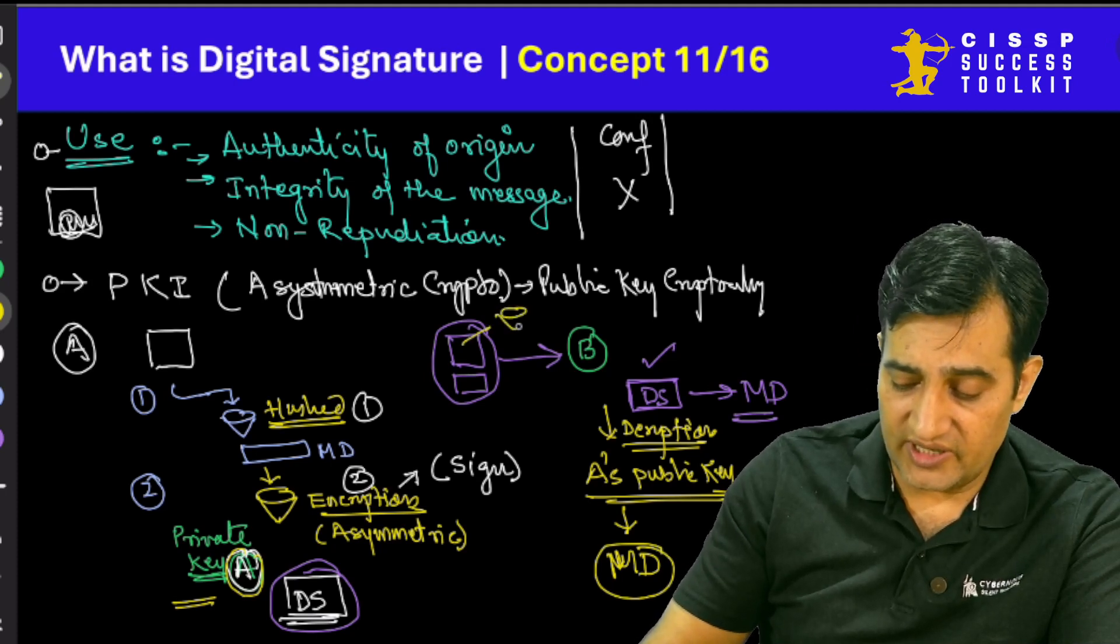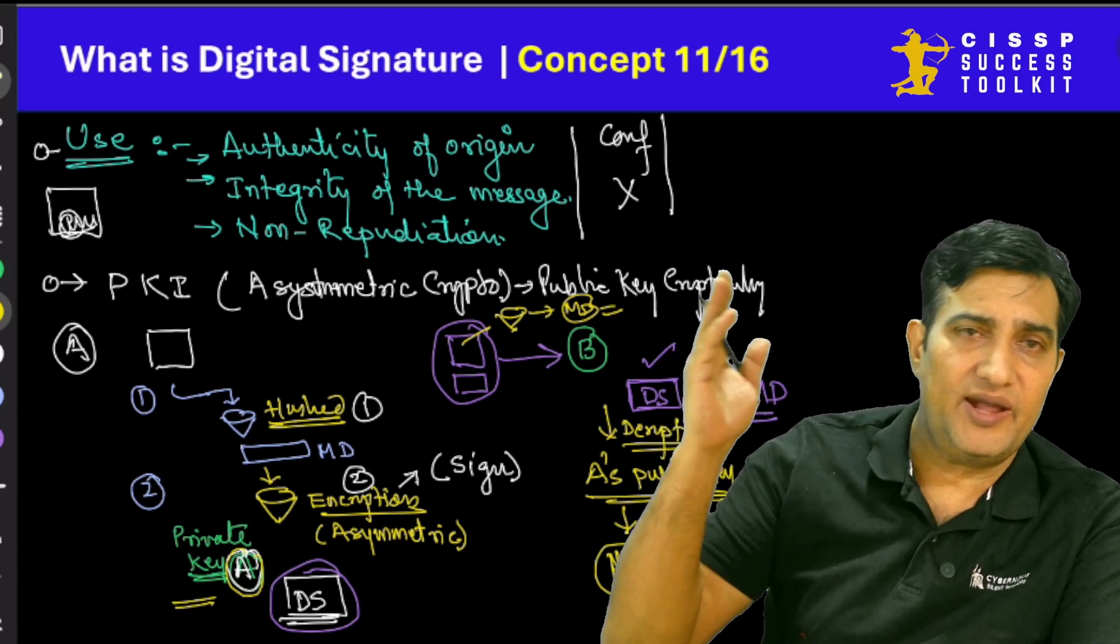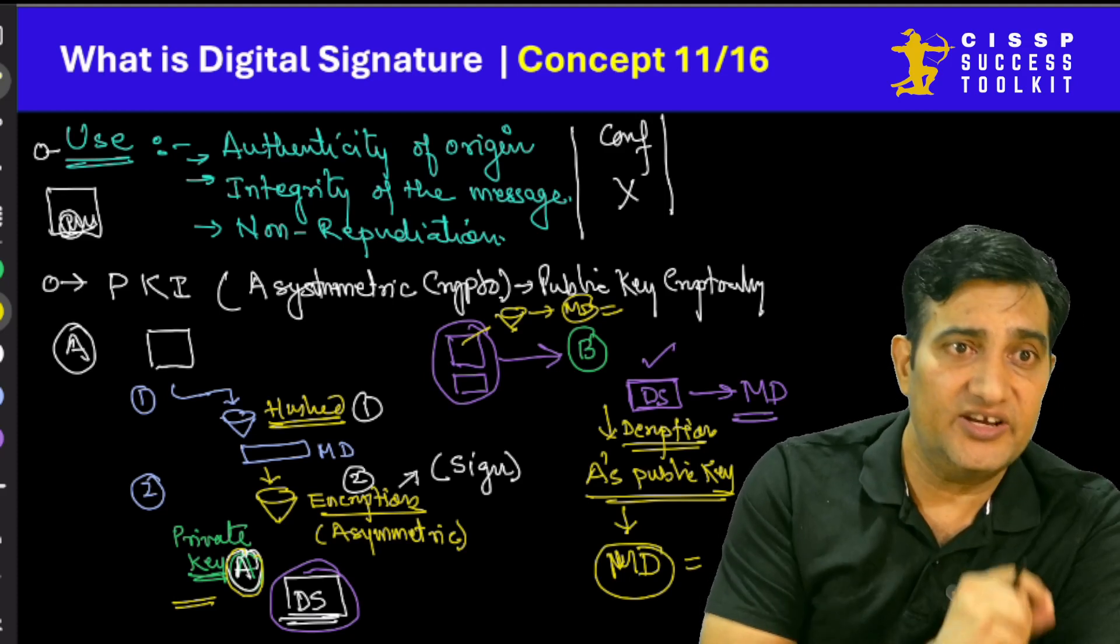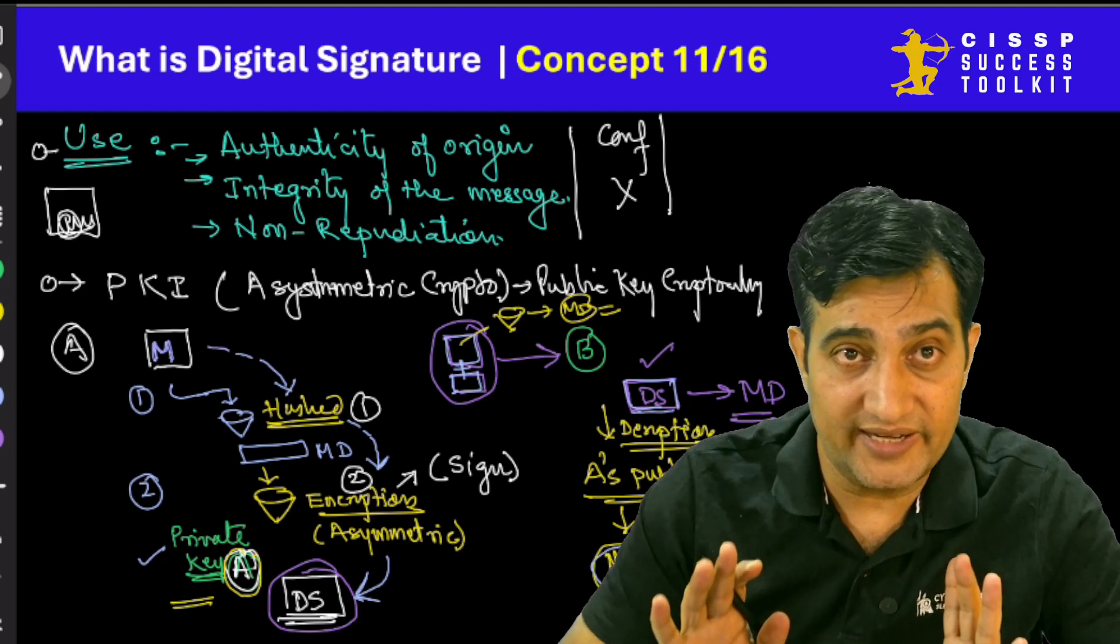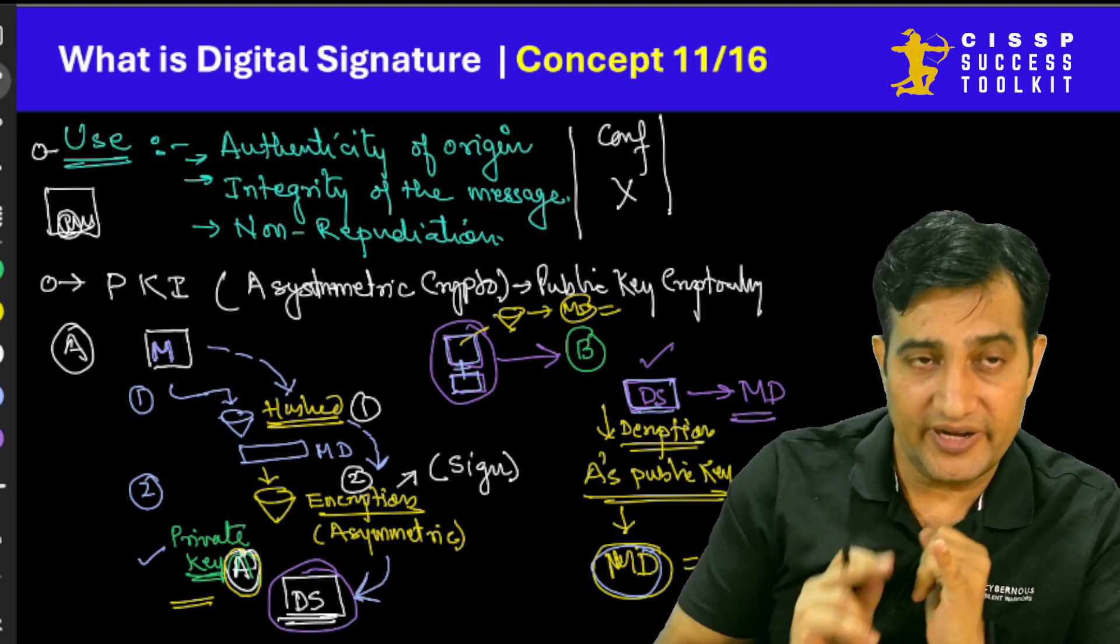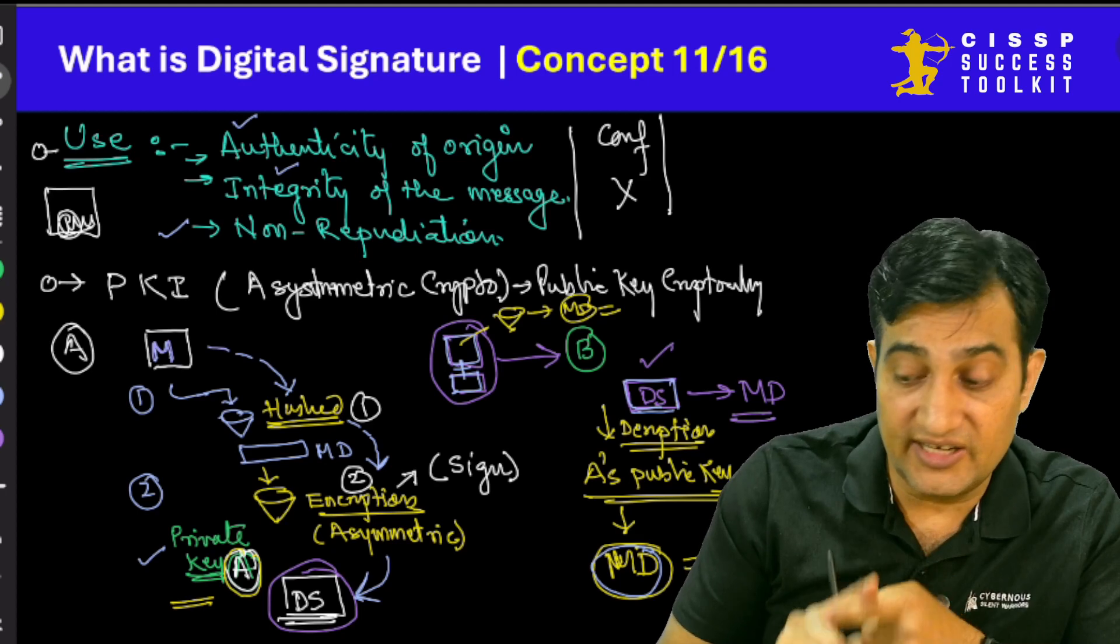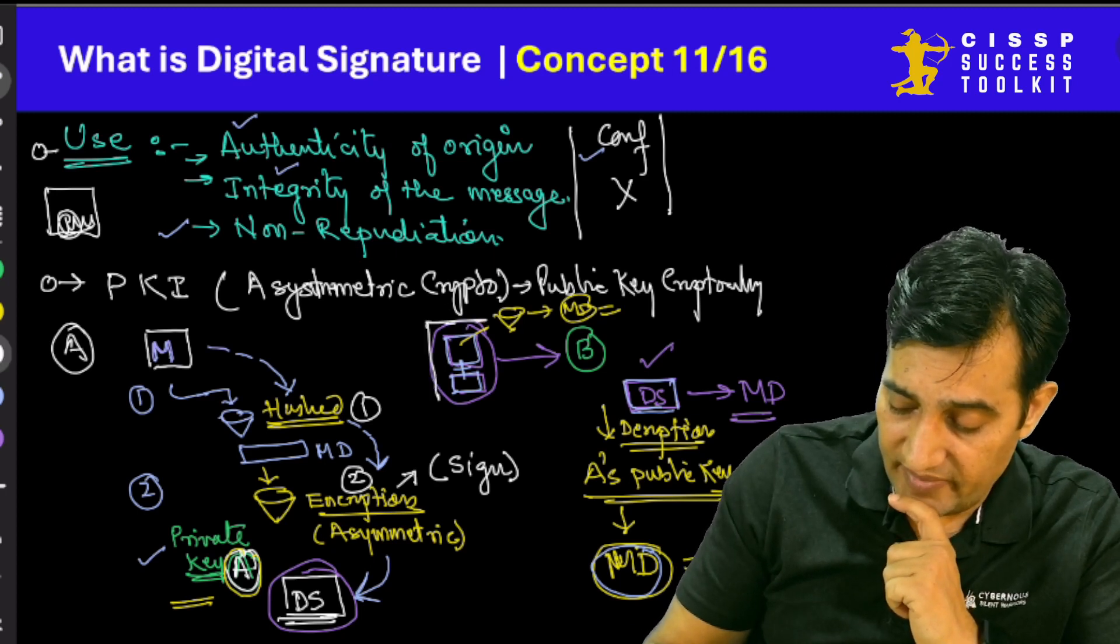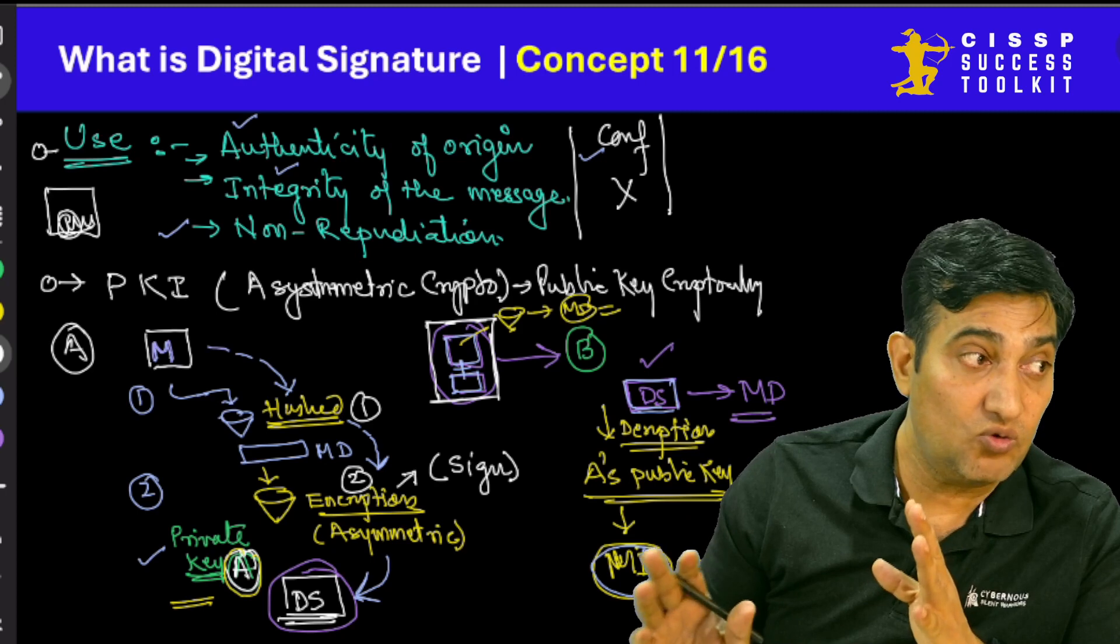Once we decrypt it, the particular person will get the message digest. And then, same thing happens. He will take the message, let it pass through the hashing algorithm, generate another message digest of his own, and then compare this with this. Simple. As normally any time happens in hashing. So this is the entire concept of digital signature. Now, we will go a step further. I hope you understand the entire concept of digital signature. Now, one more thing and very important. I told you a digital signature gives you authenticity, it gives you integrity, it gives you non-repudiation.